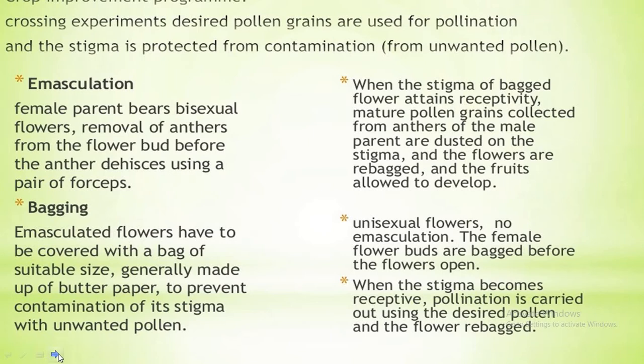We will now start with artificial hybridization. It is the crossing of different species or often genera to combine desirable characteristics to produce commercially superior varieties. It has been used by plant breeders for crop improvement programs, and it is achieved by two methods.